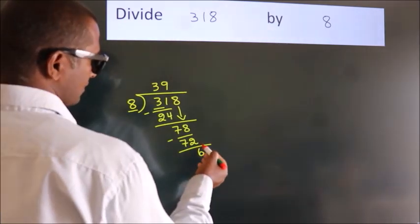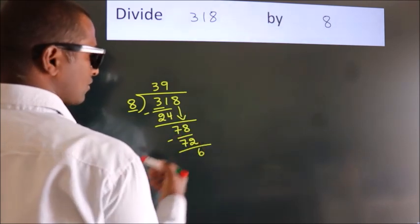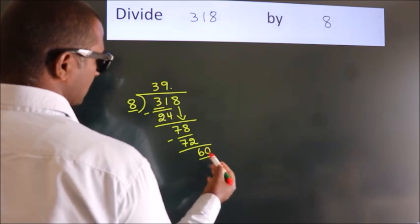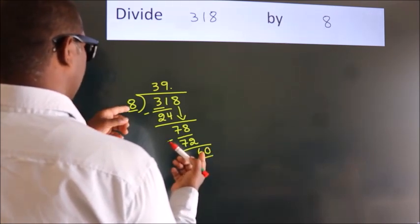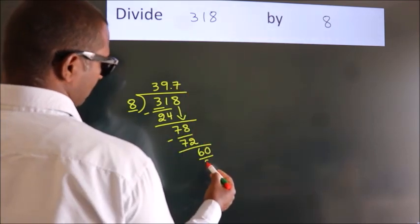After this, no more numbers to bring it down. So, what we do is, we put dot, take 0. So, 60. A number close to 60 in 8 table is 8 sevenths, 56.